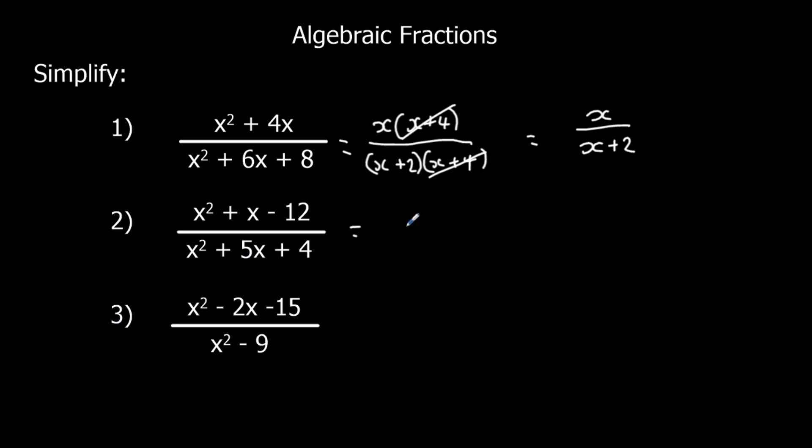Okay, same again here. We need to factorize the top, factorize the bottom. So they're both double brackets. What multiplies to make 12 and adds to make 1? It would be plus 4 minus 3. And on the bottom, we know one of these two is going to be in it. What multiplies to make 4? Adds to make 5. 4 and 1. And we cancel out the x plus 4s. So the final answer is x minus 3 over x plus 1.